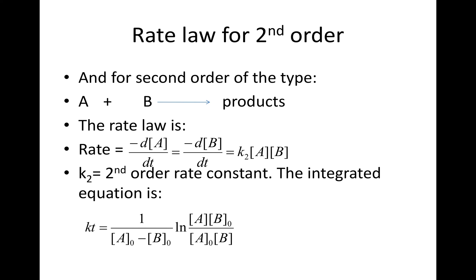k₂ is the second order rate constant. And the integrated equation is k₂t = 1/(A₀-B₀) × ln(A×B₀/A₀×B).